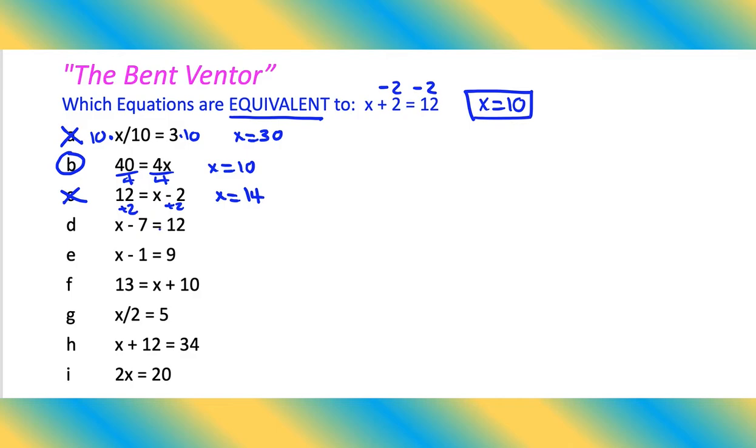D, we have x minus 7, so we would add 7, add 7. x equals 19, nope.